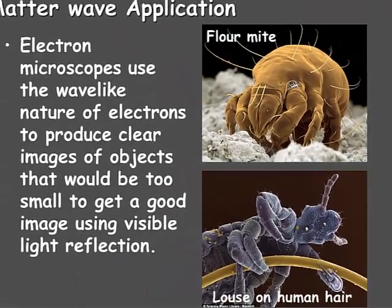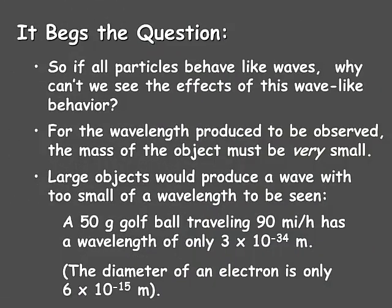So, if all particles behave like waves, why is it we can't see the effects of this wave-like behavior? It turns out that for the wavelength produced to be observed, the mass of the object has to be very small. Large objects would produce a wave with too small of a wavelength to be seen. For example, a 50-gram golf ball traveling 90 miles per hour has a wavelength of only 3 times 10 to the negative 34 meters — that's a point followed by 33 zeros and then a 3.